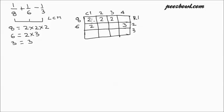We need to write similar numbers in one column. For example, for 8 we had written 2 in column number 1. And for 6, as we had only 2 and 3, so in column 1 we wrote 2 and in column 4 we wrote 3. Same with 3 — this time 3 will come in column number 4. To find out the LCM, we need to multiply all the prime factors of 8, 6, and 3.